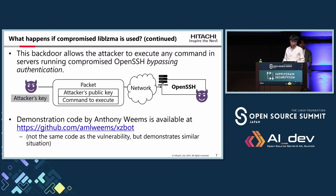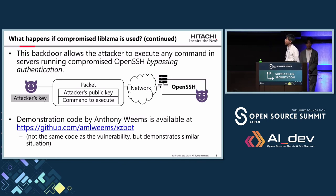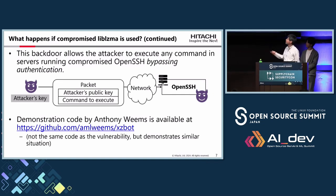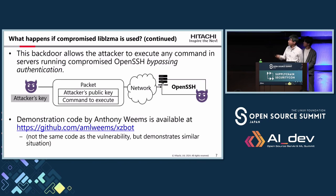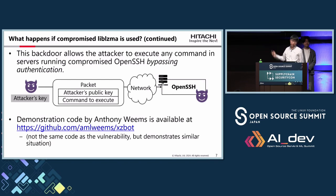What results from this? This backdoor allows the attacker to execute any command on servers running this compromised OpenSSH, bypassing authentication. If an attacker sends a packet with their public key and a command to execute via network to a server running OpenSSH linked to the compromised liblzma, the OpenSSH server will execute that command without authentication — meaning the attacker can run any program on the server just by sending a packet.